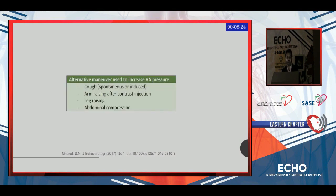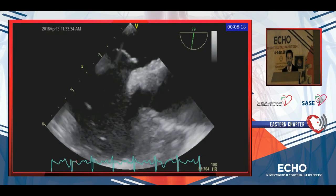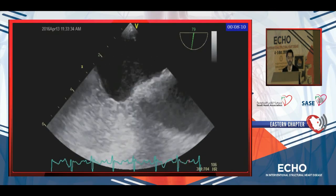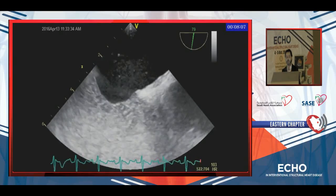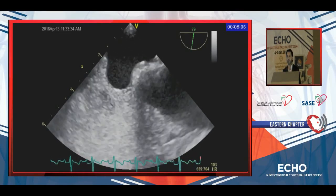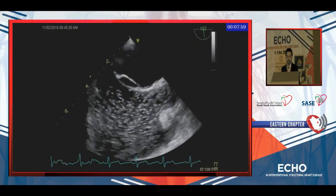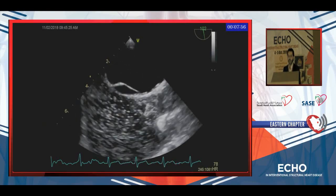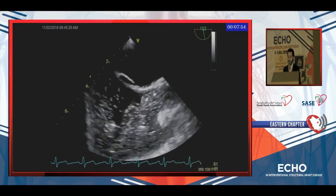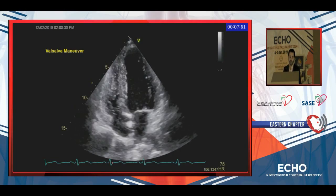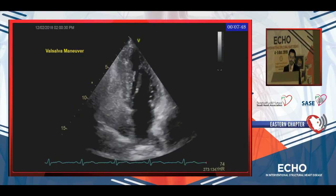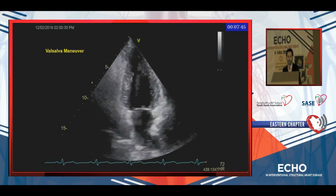Alternative maneuvers include asking the patient to cough spontaneously, inducing cough, arm raising, leg raising, or abdominal compression — especially in transthoracic echo. This is an example of a bubble appearing after five beats, passing between the thick membrane and the thin mobile septum primum. Sometimes you have inadequate injections — you should not comment on those; you have to repeat the study. This is the same patient with an adequate injection and good Valsalva, and it is positive for PFO.